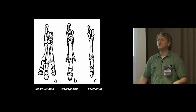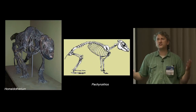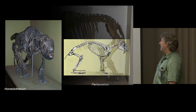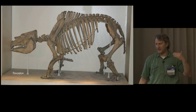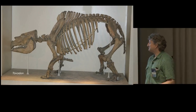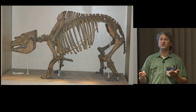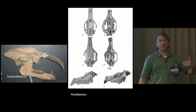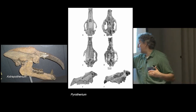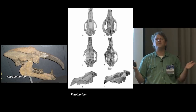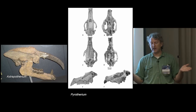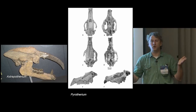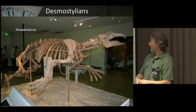Toxodon, the more robust form, made it almost to modern times and would have encountered Paleoindians. DNA from Macrauchenia and Toxodon pins them as stem perissodactyls. Unfortunately, some groups like Astrapotherium and Pyrotherium died out too early for DNA recovery, so their placement remains uncertain, though there is some osteological evidence they may be part of the same radiation. There may ultimately be a single group of South American ungulates.